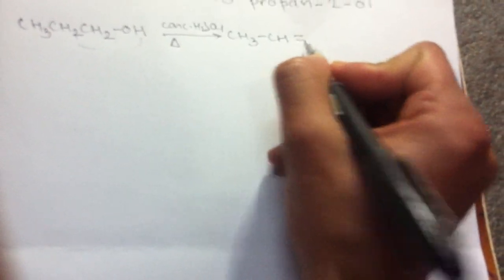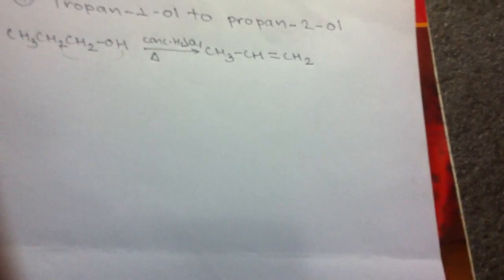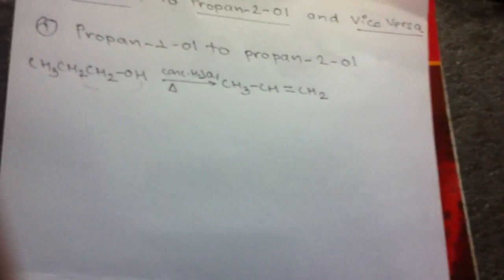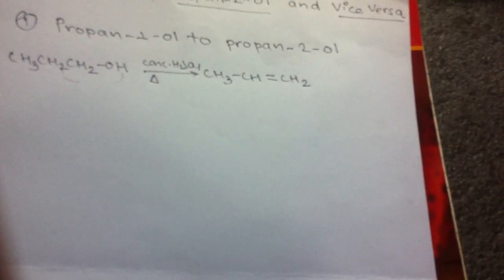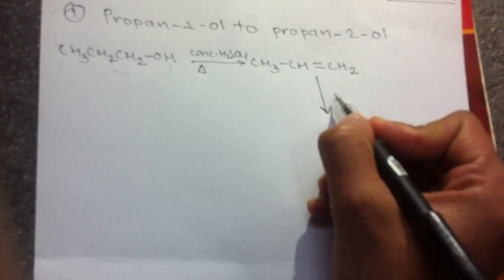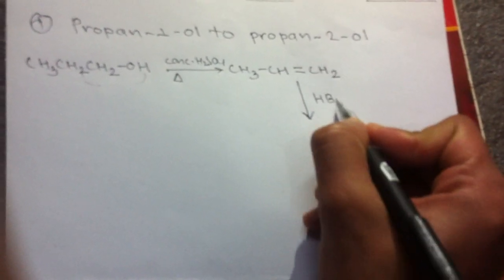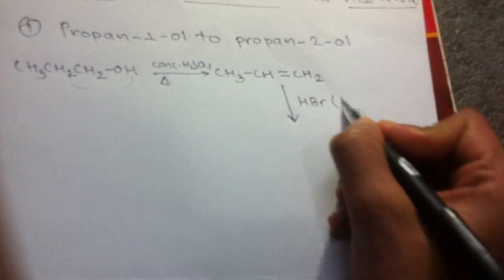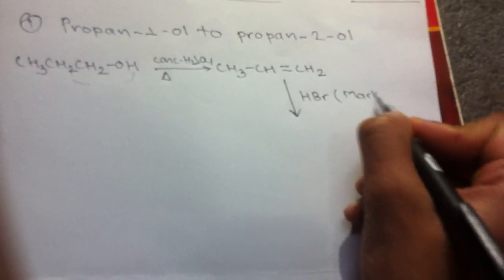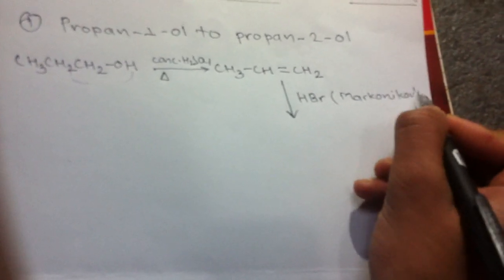There is a double bond formed. Then we use Markovnikov's rule. With HBr addition, Markovnikov's rule is the important rule to apply here.